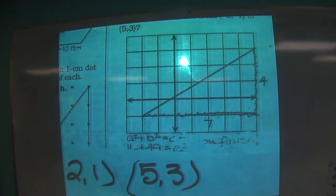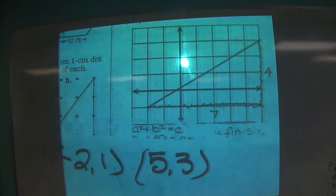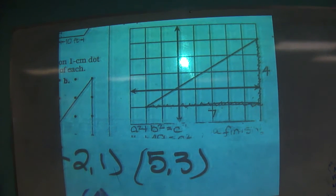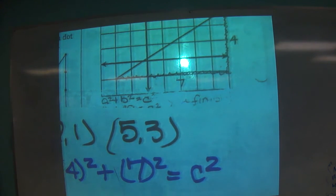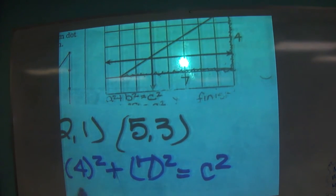So if I went 4, 7, what sides do I have? A, B, or C, or which two? A and B. So I have A squared plus B squared, and I want to find C squared. So what's 4 squared? 16. Plus 49 equals C squared.